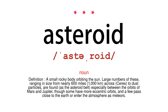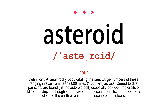Large numbers of these, ranging in size from nearly 600 miles across to dust particles, are found especially between the orbits of Mars and Jupiter, though some have more eccentric orbits, and a few pass close to the Earth or enter the atmosphere as meteors.